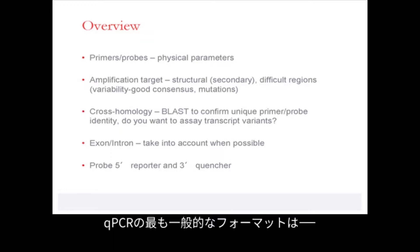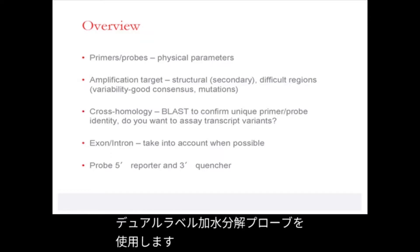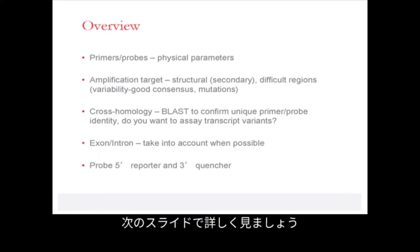The most common format for qPCR that you are likely to encounter is the five prime nuclease assay, which relies upon the use of dual labeled hydrolysis probes. We will look at that assay in a little more detail in the next couple of slides.